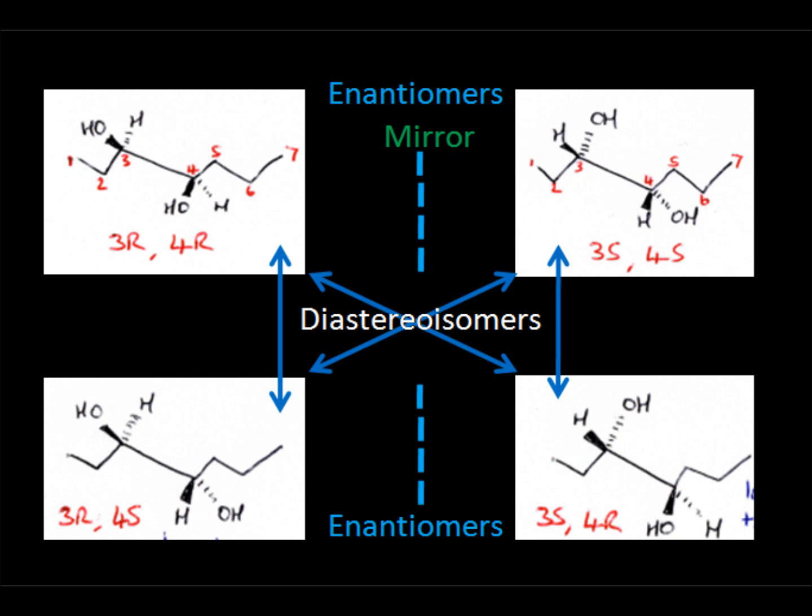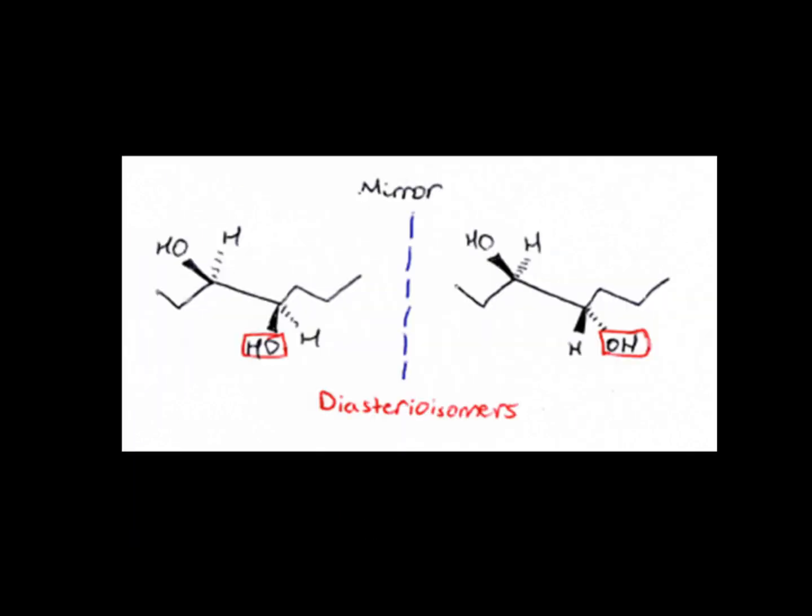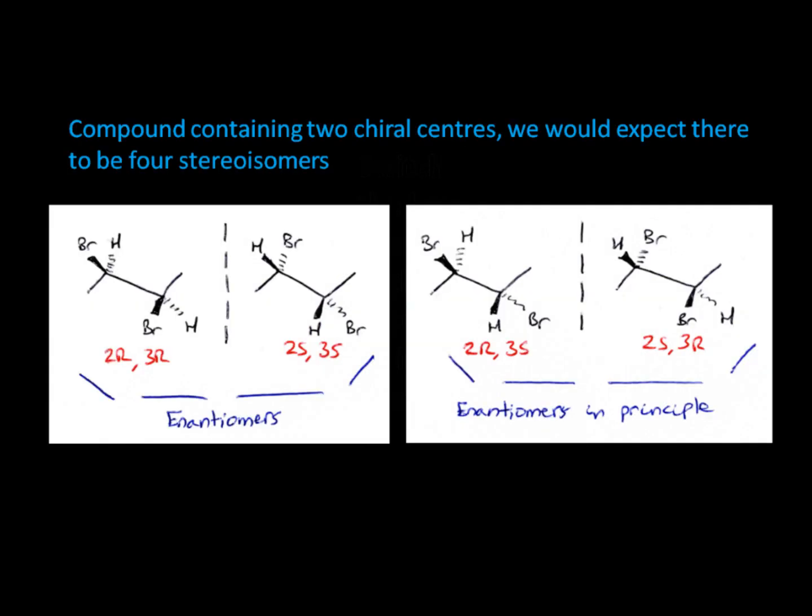This is because these compounds are not mirror images of one another, as shown here. Therefore, in order to create an enantiomer, all the chiral centres in the compound must be inverted. As I said at the start, there are always exceptions to the 2N rule when predicting the number of stereoisomers, and this is where meso compounds come in.